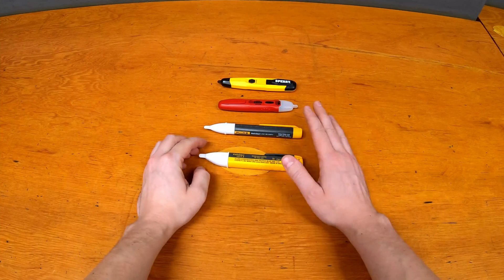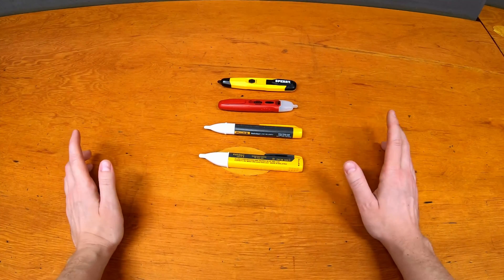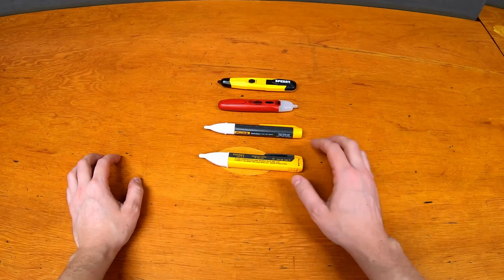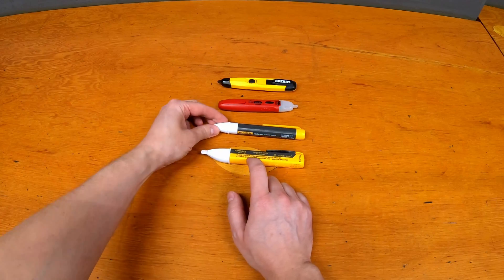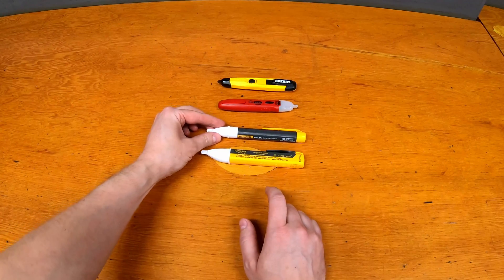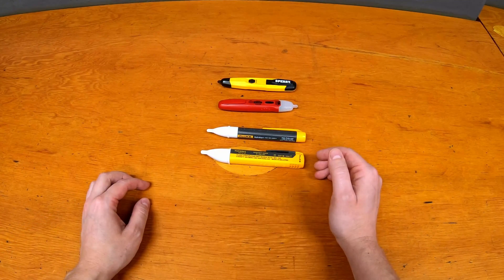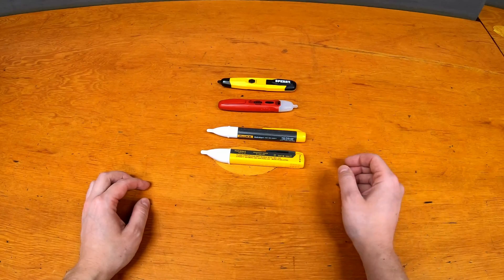The first two here are both from Fluke, Fluke being kind of the industry standard for any sort of electrical testing equipment. In particular this is the 1AC version 2, and this is the 2AC. They both have slightly different feature sets, but work essentially the same way.